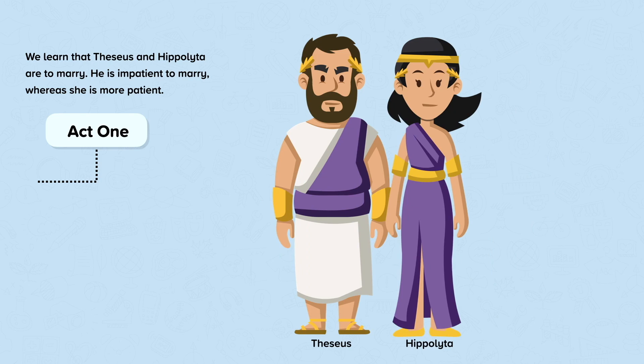In this nugget we're going to learn about the character Theseus from the play A Midsummer Night's Dream by Shakespeare. Let's make a timeline of all of the key events from the play in which Theseus is involved.